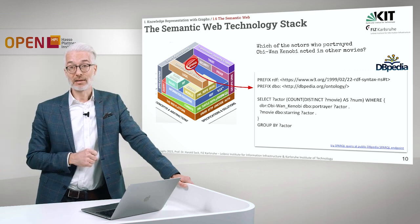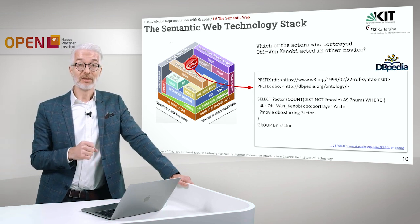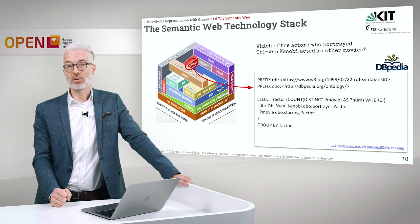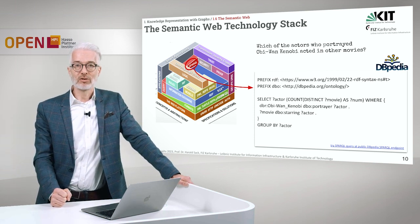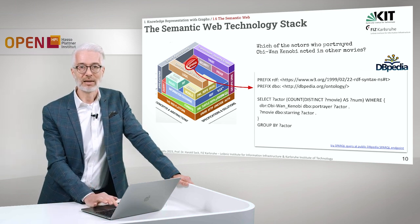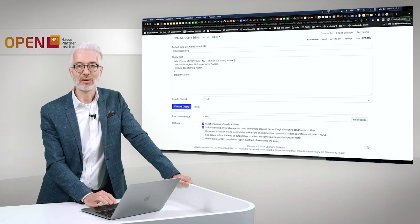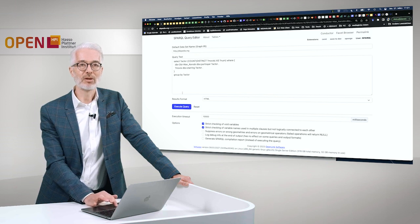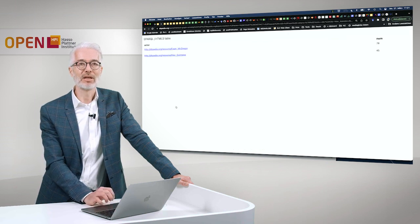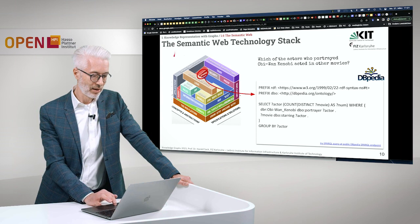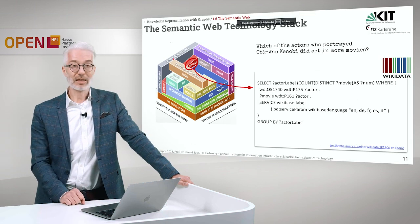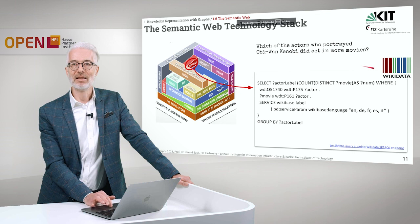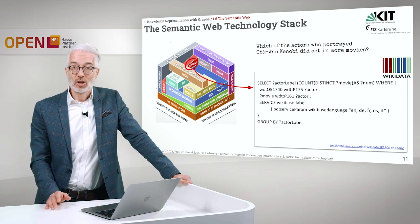Here you see a simple query which determines which actors who portrayed Obi-Wan Kenobi also acted in other movies. You can click on the link shown here, which takes you to the query engine where you execute the query, and you see that the result is Ian McGregor and Alec Guinness. You can also do the exact same thing on another knowledge base — first we did this on DBpedia, here is another example on Wikidata.